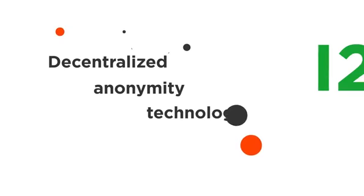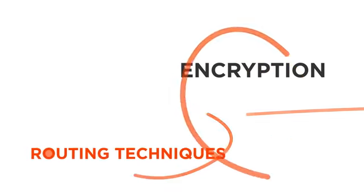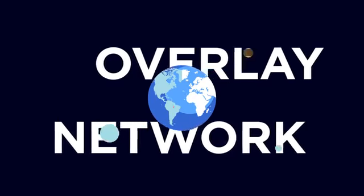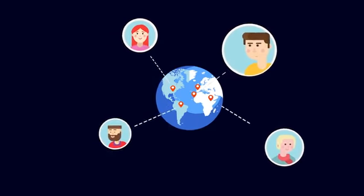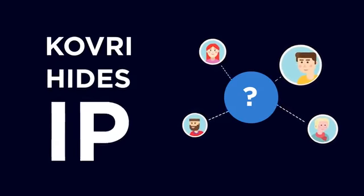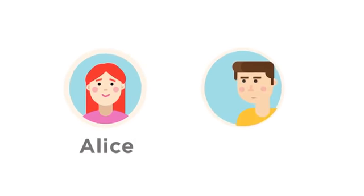Kovri is a free, decentralized anonymity technology based on I2P's open specifications. Kovri uses both encryption and sophisticated routing techniques to create a private overlay network across the Internet. This protected overlay allows users to hide their geographical location and IP address. An IP address is like a home address for the Internet, so this is quite sensitive information to say the least. Let's go through a few scenarios to see how this lightweight, security-focused software helps strengthen a user's privacy.